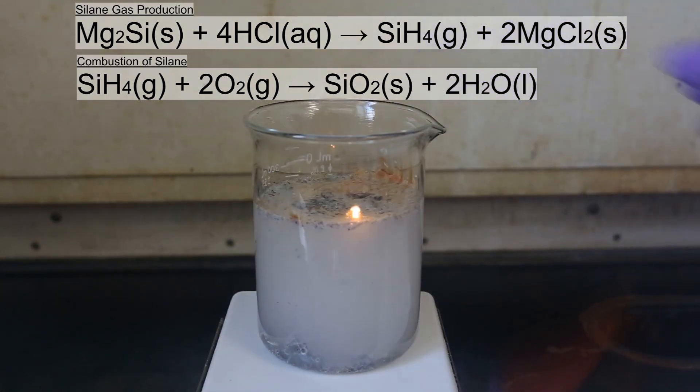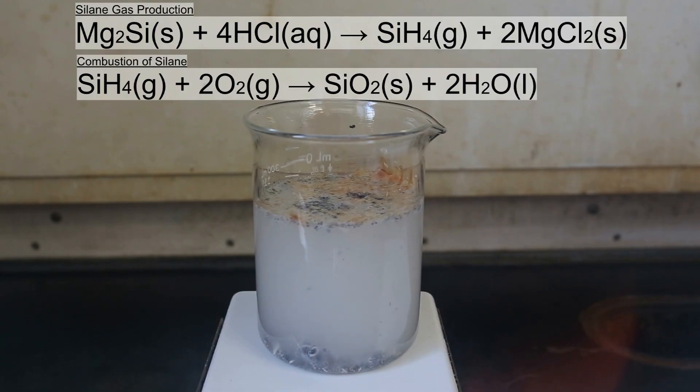The silane gas bubbles up through the solution and immediately ignites upon exposure to air. The silane gas reacts with oxygen to reform the much more stable silicon dioxide. A lot of the other bubbling you see is magnesium oxide and unreacted magnesium metal reacting with hydrochloric acid.